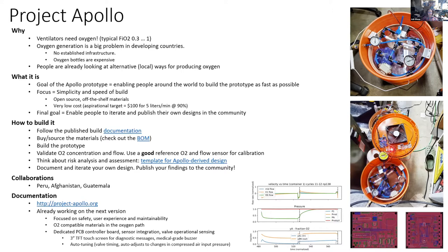The goal of the prototype is to enable people around the world to build their own prototypes as fast as possible. We focus on simplicity and speed of builds — as soon as you get the materials in the mail, you should be able to build this oxygen concentrator in an afternoon. The cost is very low. In bulk, we aspire to a $100 oxygen concentrator delivering five liters per minute at 90% oxygen concentration.